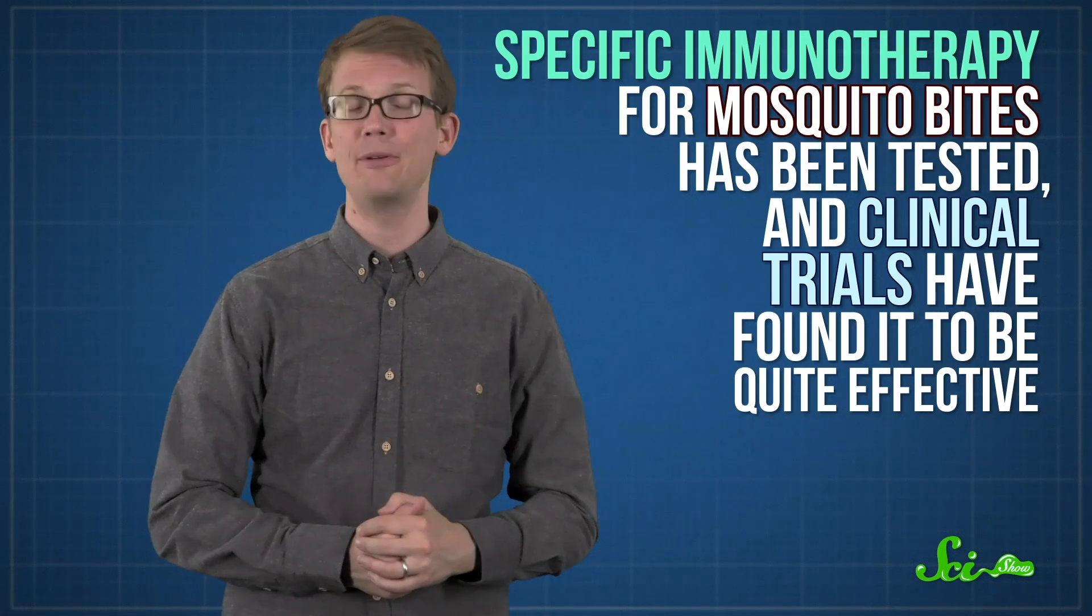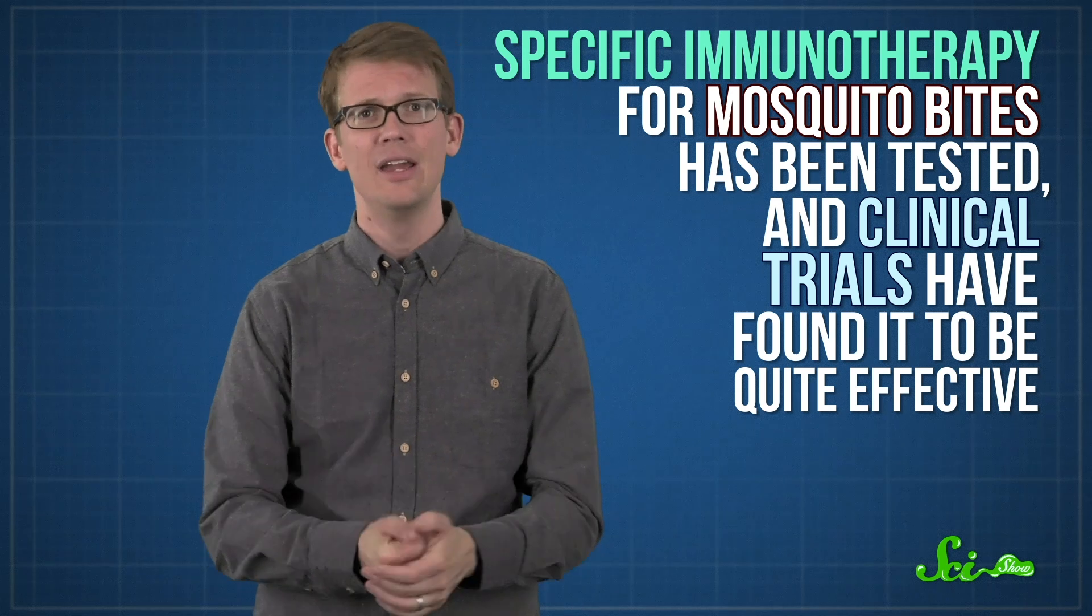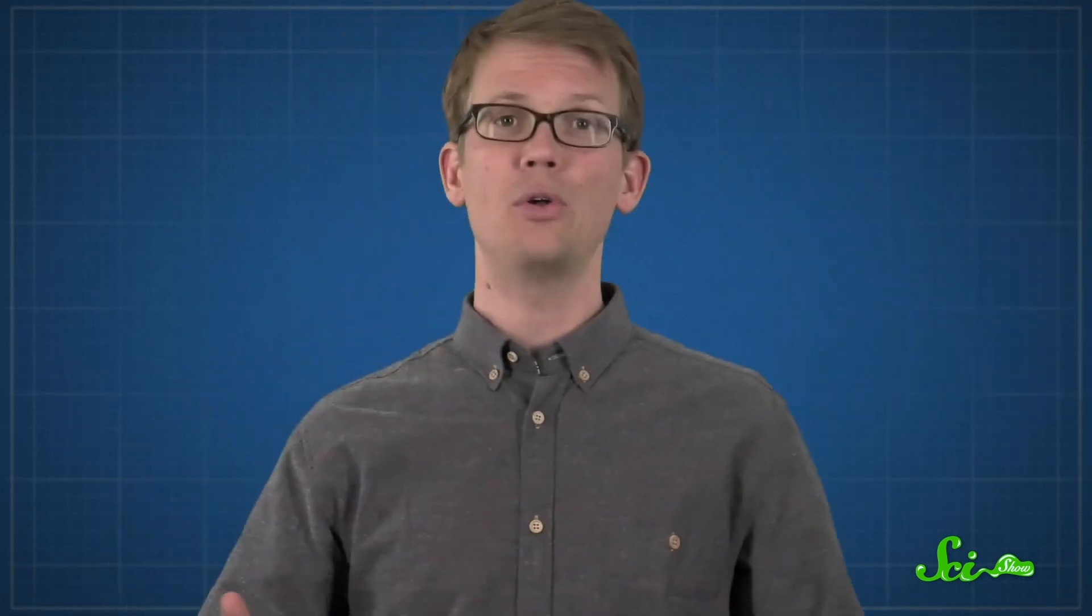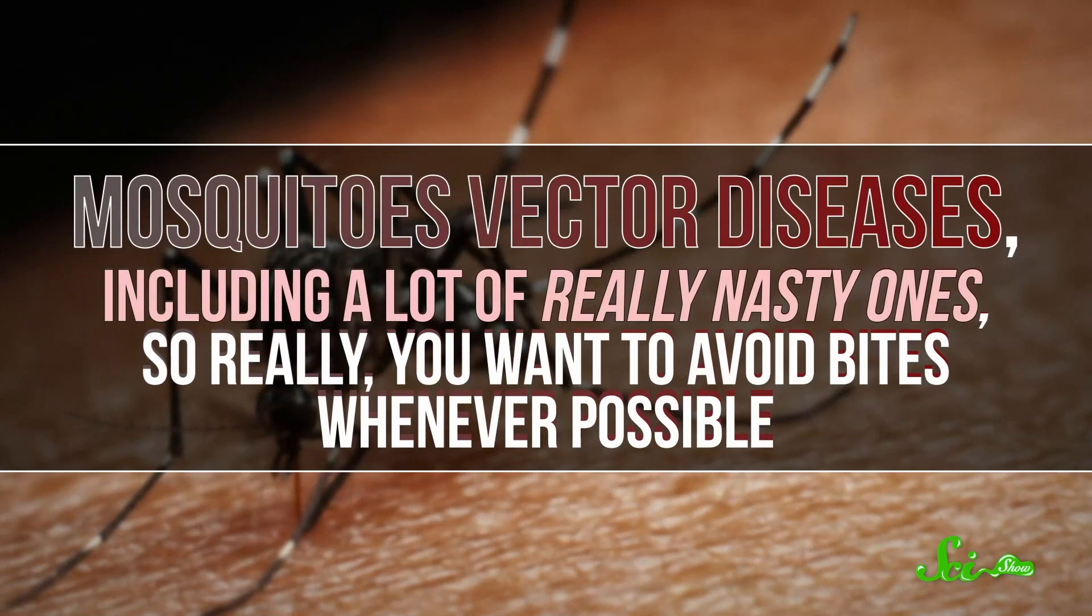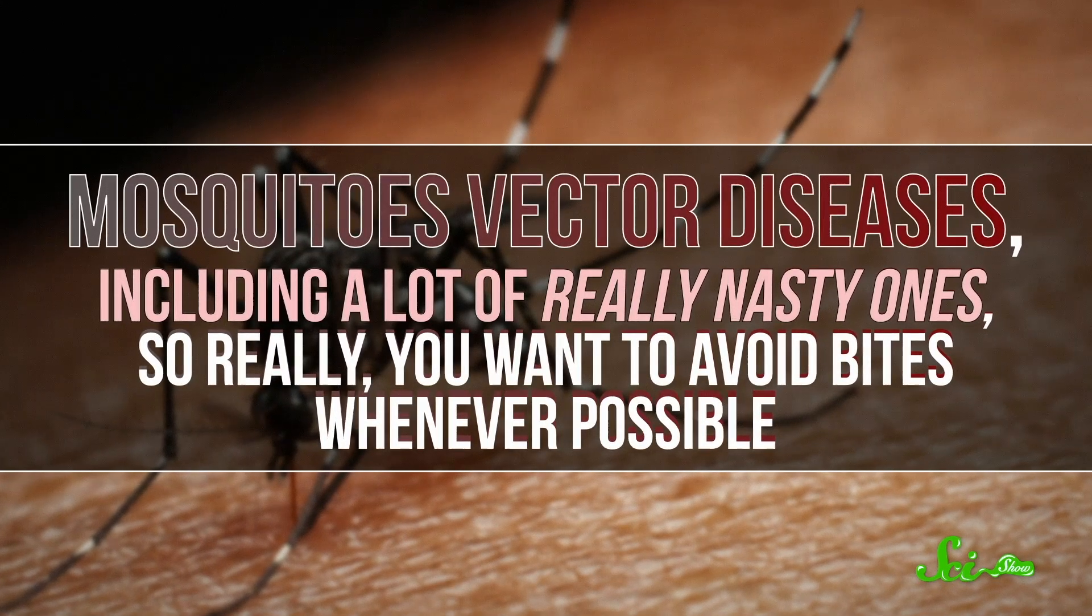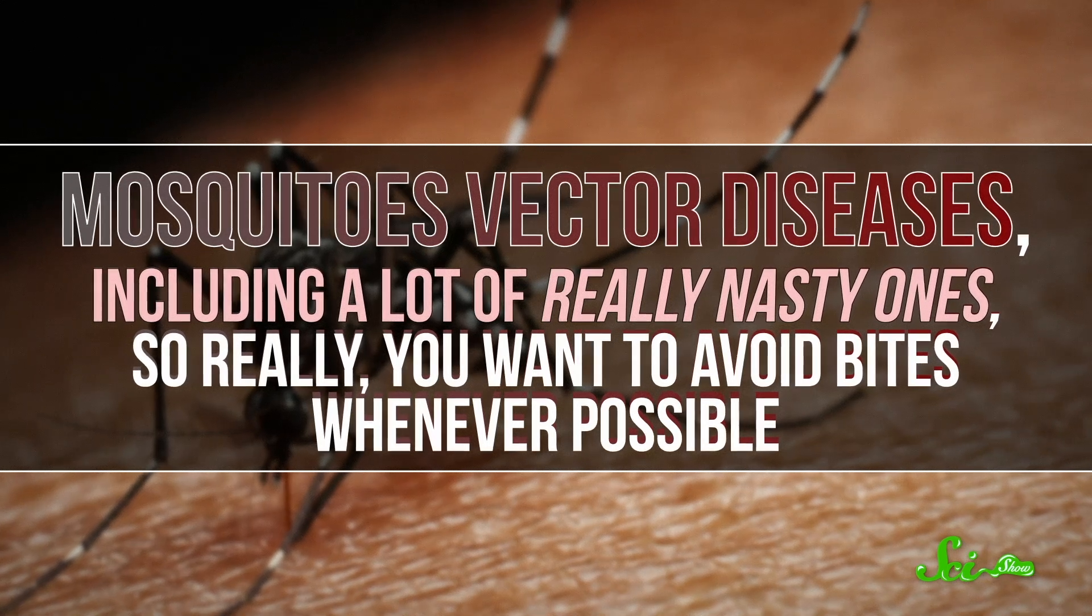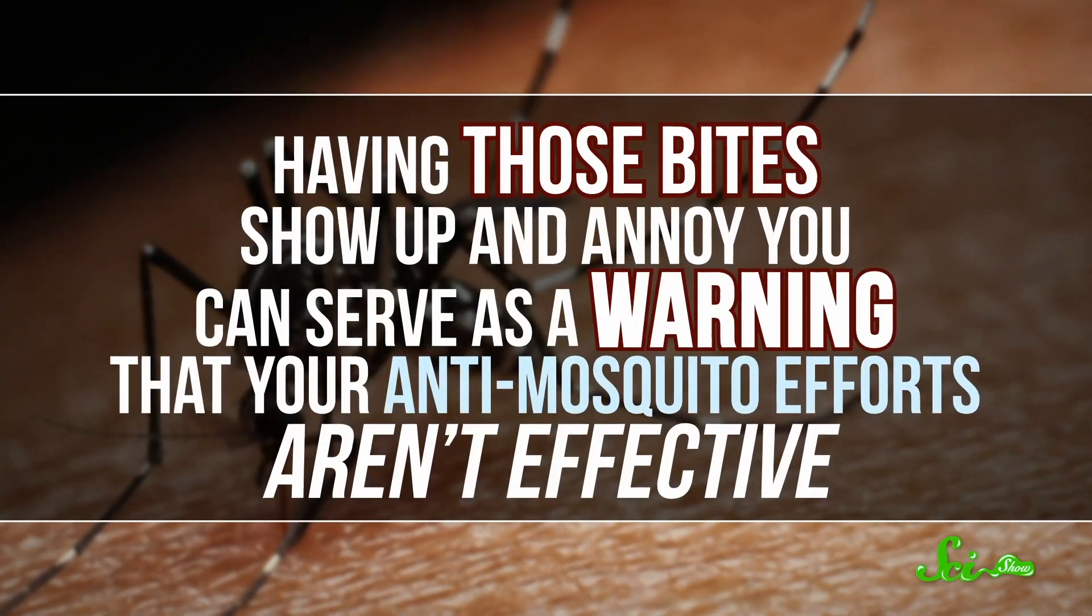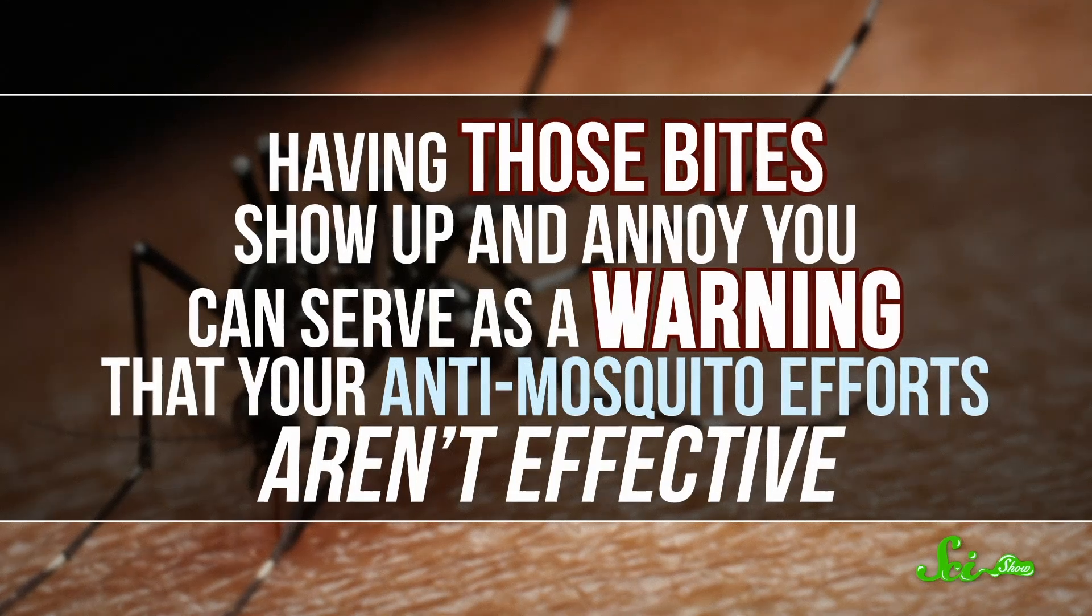Besides, it might not be too long before your allergist can help you get rid of those welts without thousands of bites. Specific immunotherapy for mosquito bites has been tested, and clinical trials have found it to be quite effective. But also, there are some reasons you might not want to be completely unaware you're getting bitten. Mosquitoes vector diseases, including a lot of really nasty ones, so really you want to avoid bites whenever possible. Having those bites show up and annoy you can serve as a warning that your anti-mosquito efforts aren't effective. So maybe some itchy bumps every summer is a small price to pay to keep you vigilant against the diseases mosquitoes transmit. And you can always stock up on citronella and DEET instead.